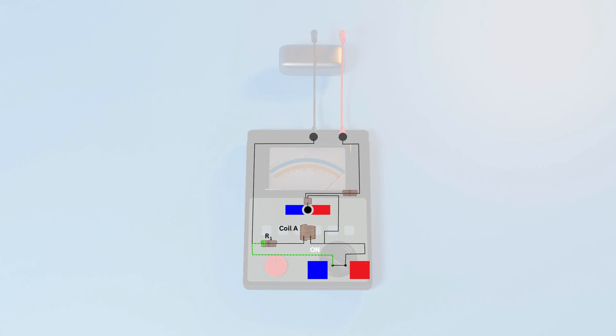When the Megger is switched on, a voltage is generated which is applied across the voltage coil A through a resistance R1. When the terminals X and Y are free initially, no current flows through coil B. The torque produced by coil A rotates the moving element to show infinity.